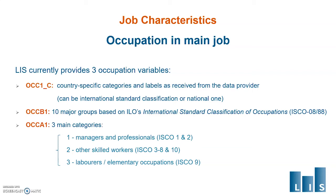The most aggregate variable, OccupationA1, has three categories: managers and professionals, other skilled workers, and elementary occupations.